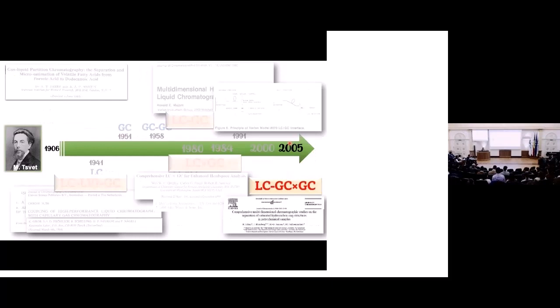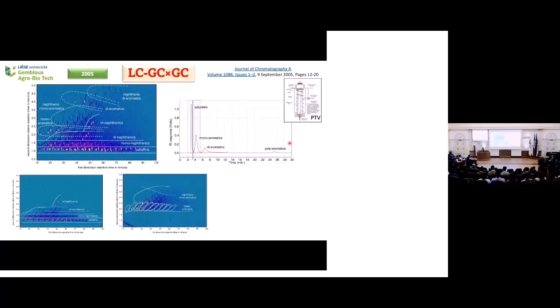The comprehensive coupling hasn't found really a full application. In 2005, Hans Gerjansson published the coupling of LC with comprehensive GC in the attempt of explaining complex samples. A PTB interface was used, characterizing and separating different fractions of saturated hydrocarbons, monoaromatics and diaromatics, and transferring them into the GC system.